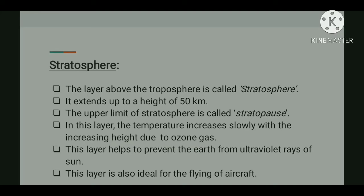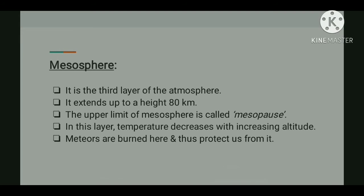The lower portion of the stratosphere has the maximum concentration of ozone, which is called the ozonosphere. It acts as a protective cover for biological communities in the biosphere because it absorbs almost all of the ultraviolet rays of solar radiation, protecting the Earth's surface from becoming too hot. This layer is also helpful for the flying of aircraft.